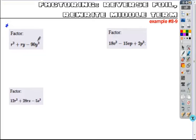Here we have our coefficient of 1, so you can just look at the factors of negative 90. What factors of negative 90 have a total sum of this middle term plus 1?